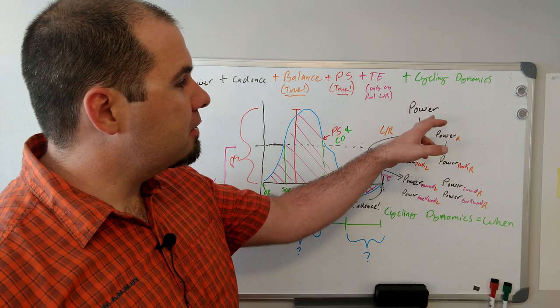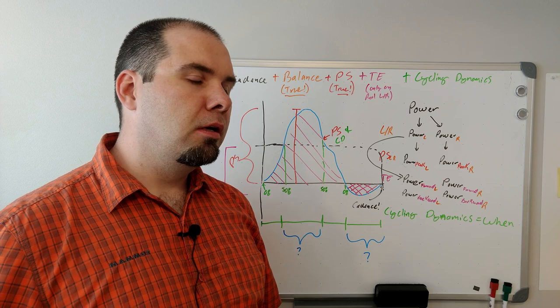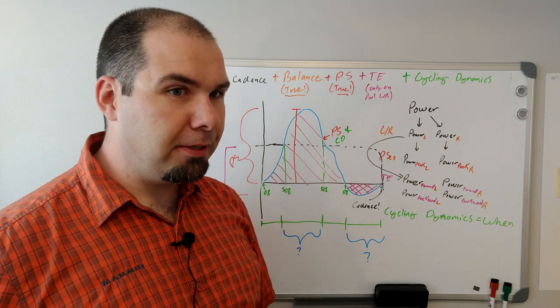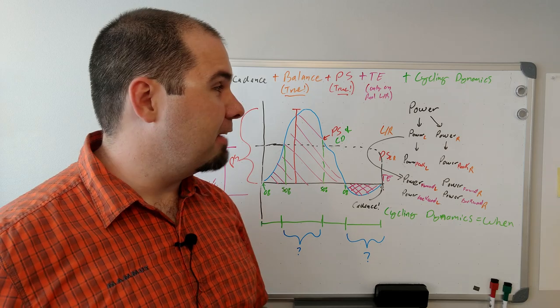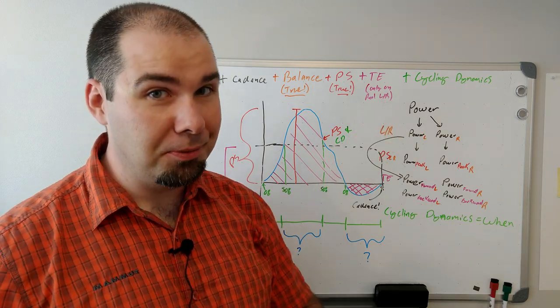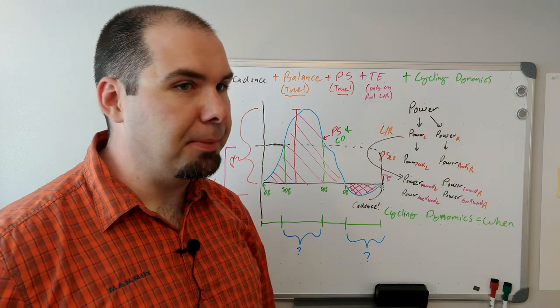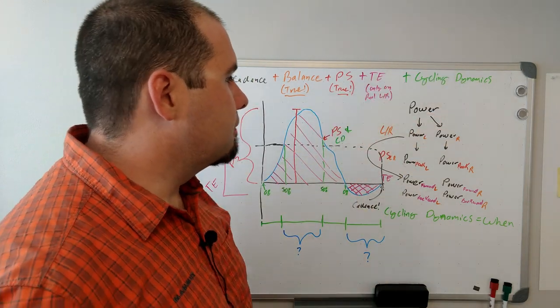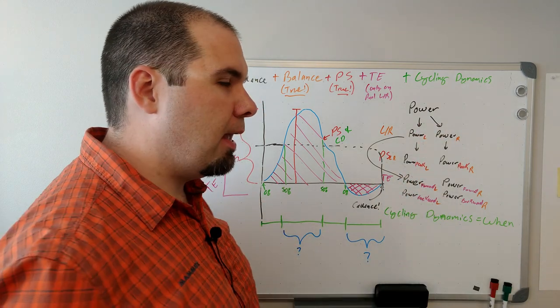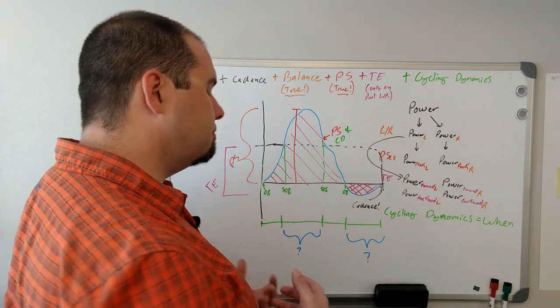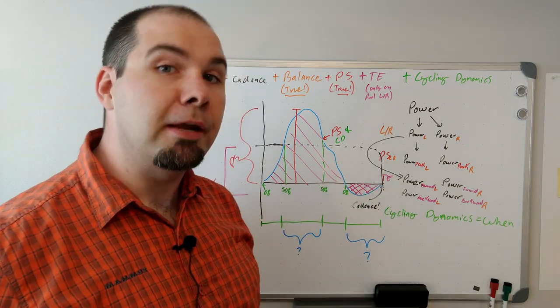So the first thing we need to do is we need our power to split into left and right, and this is only valid for true left-right reading power meters. The Powertap and Quarks, you cannot do this. In fact, you're missing the torque effectiveness, so this won't work at all. And they also can't do cycling dynamics, so they kind of fall down here. So we take our power, split it into our left and right, and we assume, or most people's curve looks something like this shape here in blue.